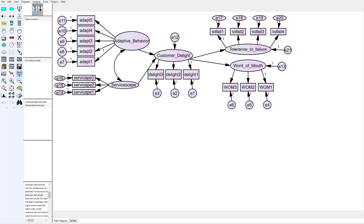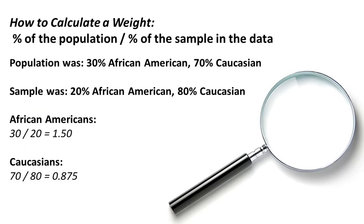Let's say my sample did not represent my population. I know my customer base is typically 30% African-American and 70% Caucasian. But when I actually sampled those customers, it doesn't accurately represent that known population — I only got 20% African-Americans and 80% Caucasian. So I'm oversampled in one racial demographic and underrepresented in another.